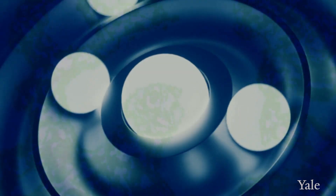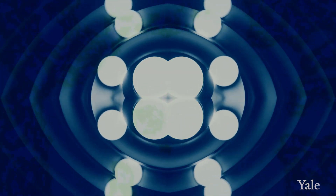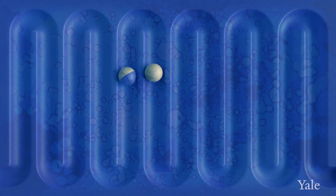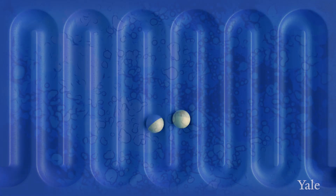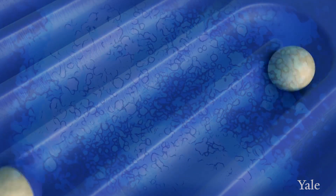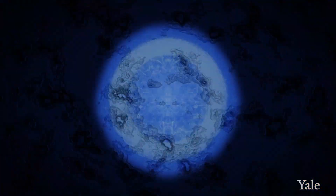Cell death is a key process that's necessary even in development in order to get a viable organism. This program is called upon again and again in almost every disease, where you either have diseases where there's too little cell death, such as in cancer, or you have diseases where there's too much cell death, such as in strokes or heart attacks.